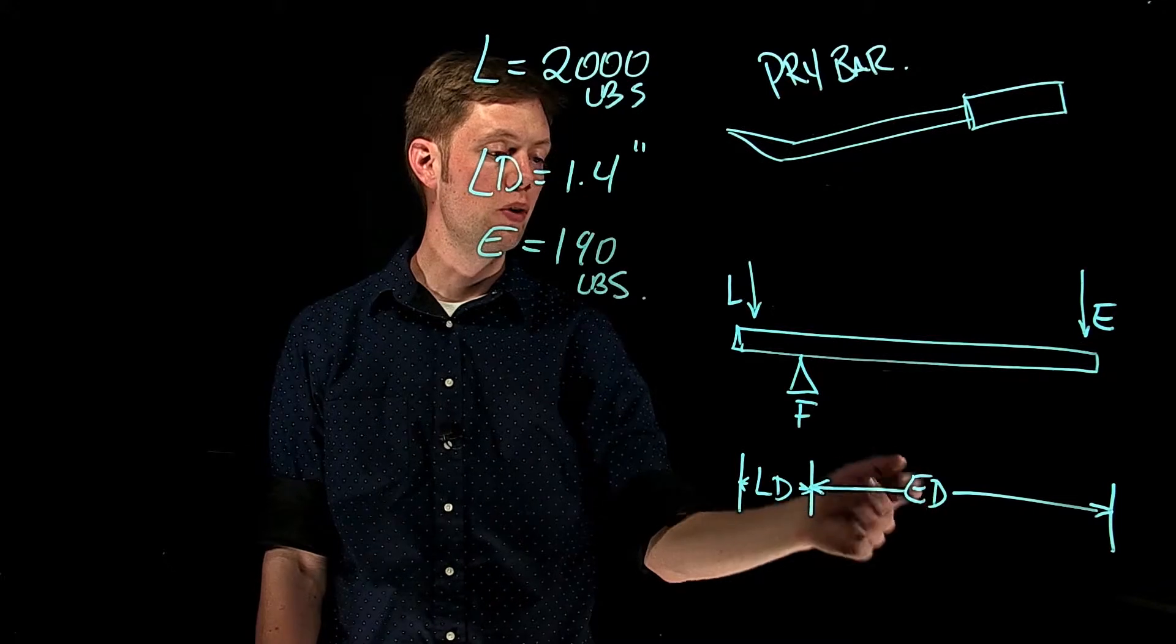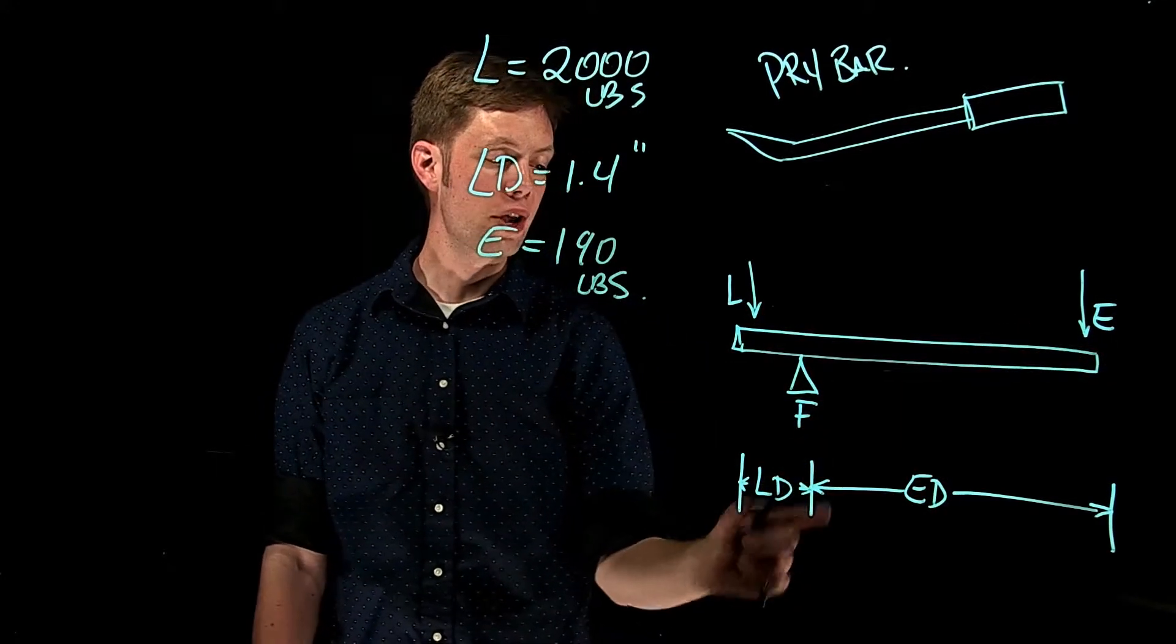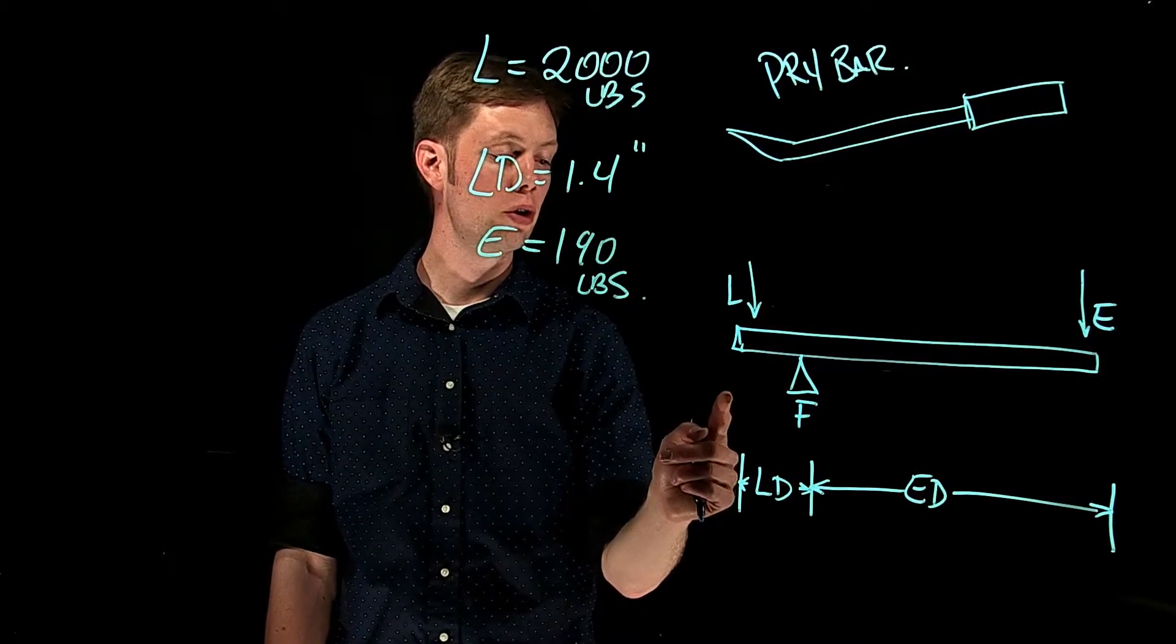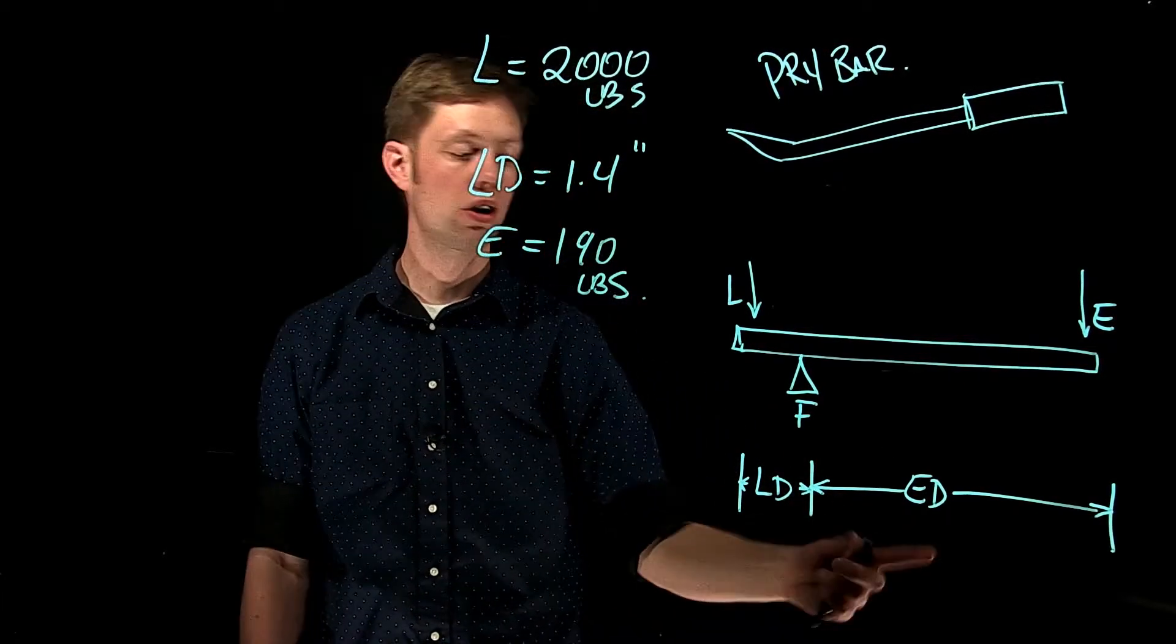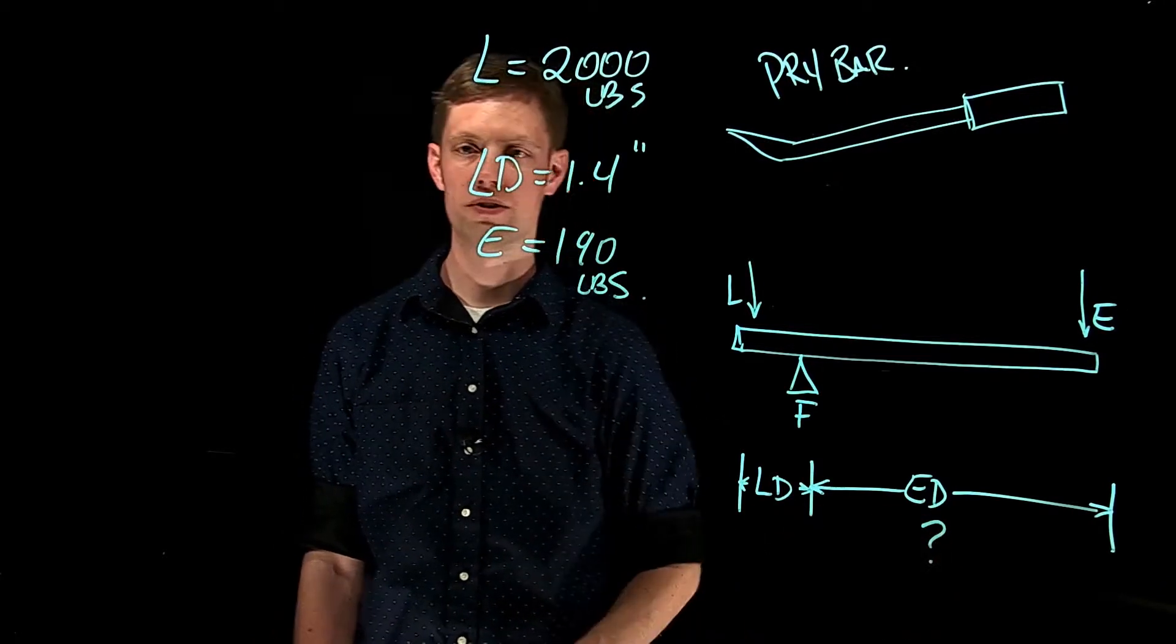Showing the diagram here, we can see we have our load, we have an effort, we have the distance from the fulcrum to the load, but we don't have the distance from the effort to the load. We call this the effort distance. This is what we're looking for and we need to find.